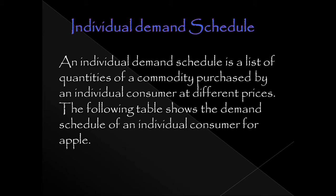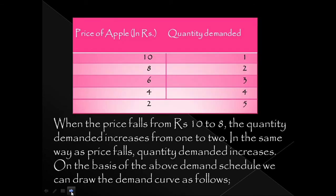A demand schedule is a list of quantities of a commodity purchased by an individual consumer at different prices. For one particular product, an individual consumer faces price level changes — different prices and different quantities. One individual consumer purchases at each price level — that is why we list it, and that is the individual demand schedule. This gives us the individual demand curve.